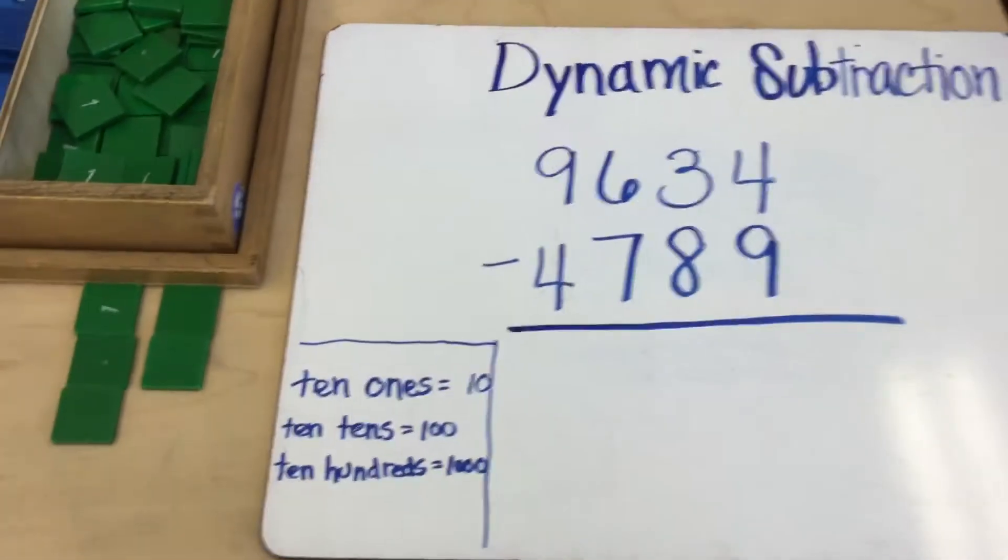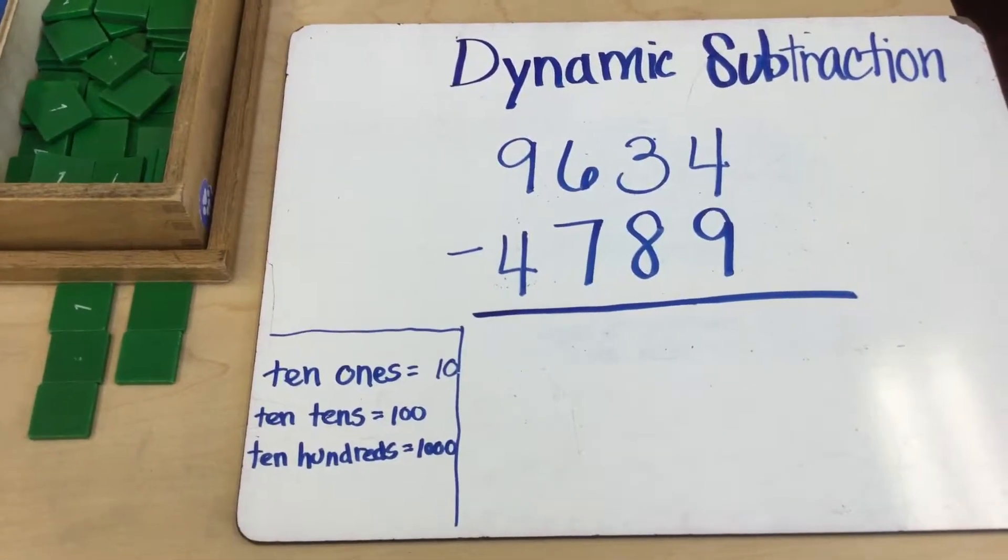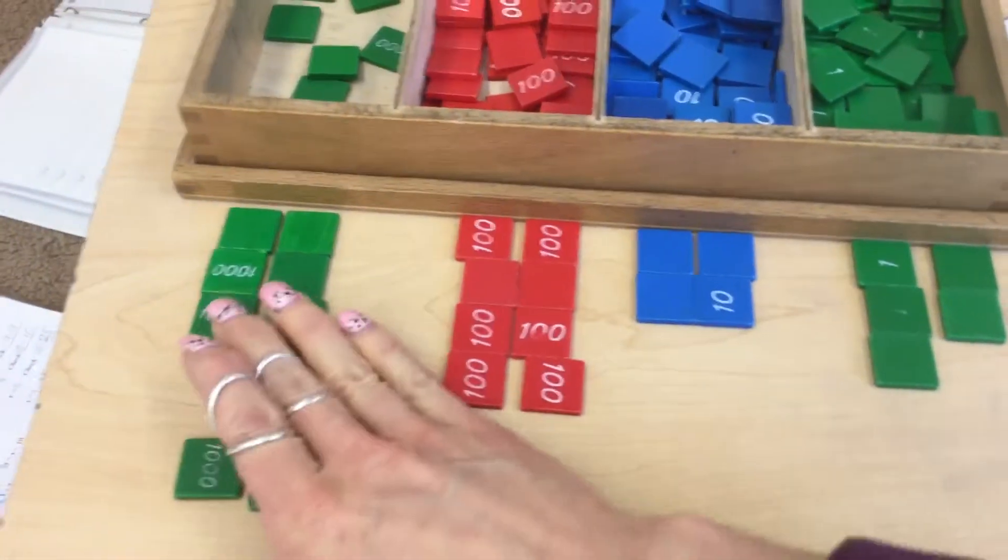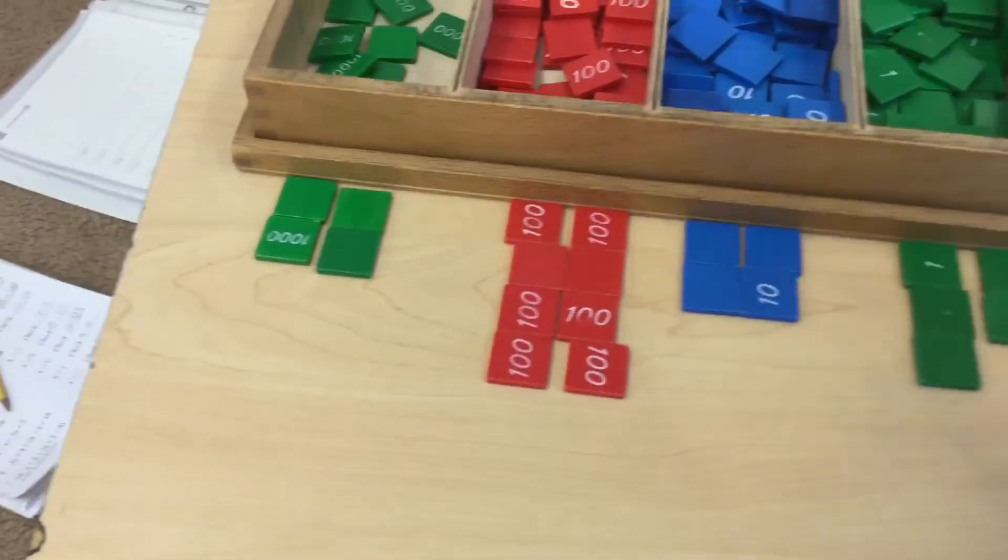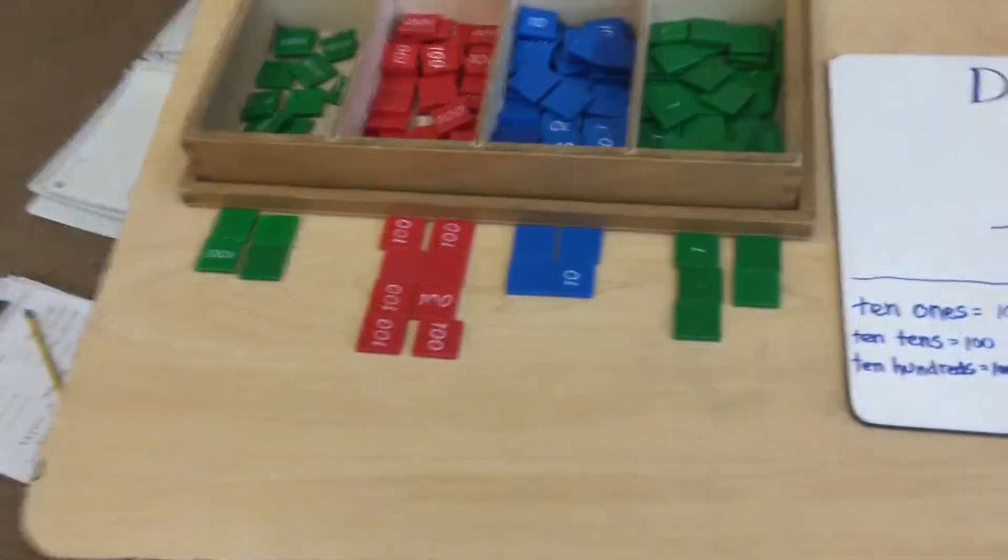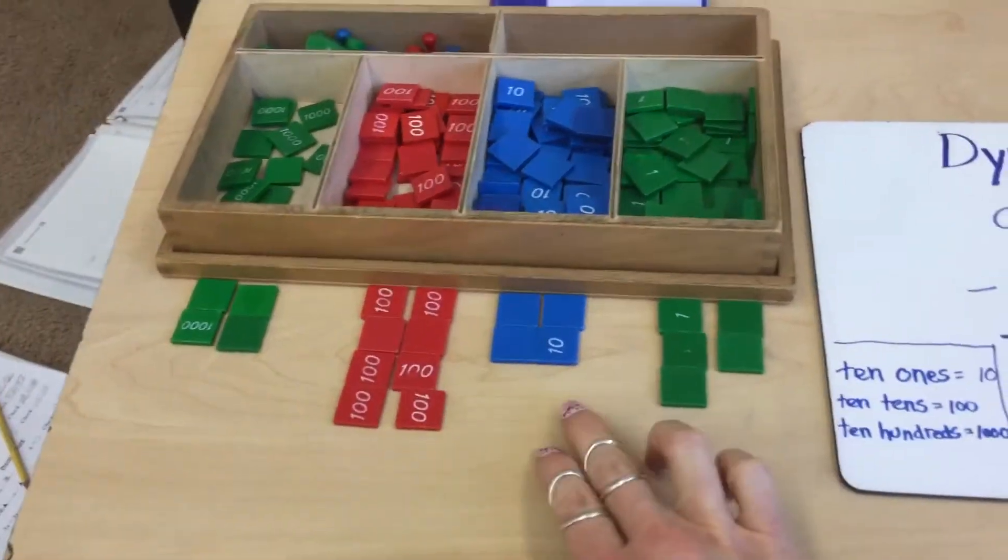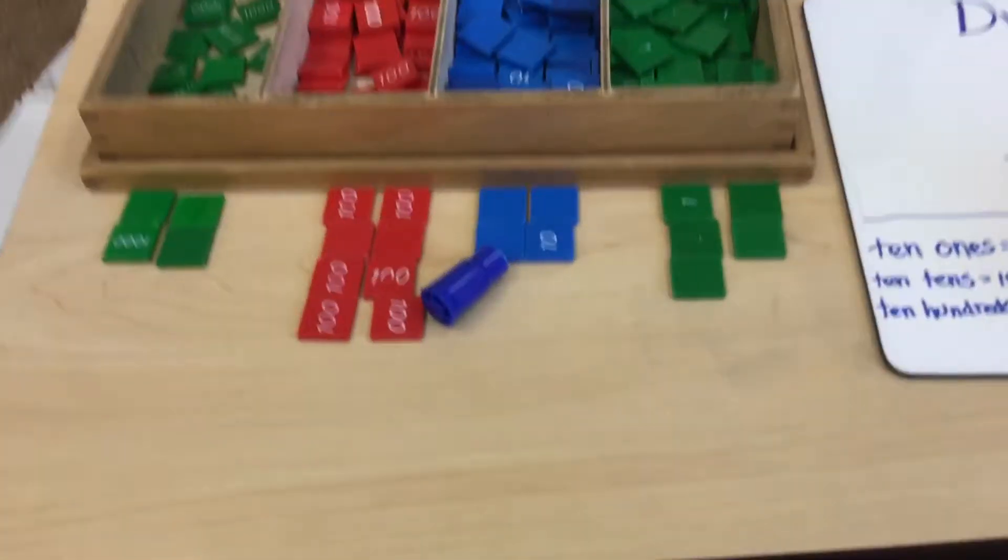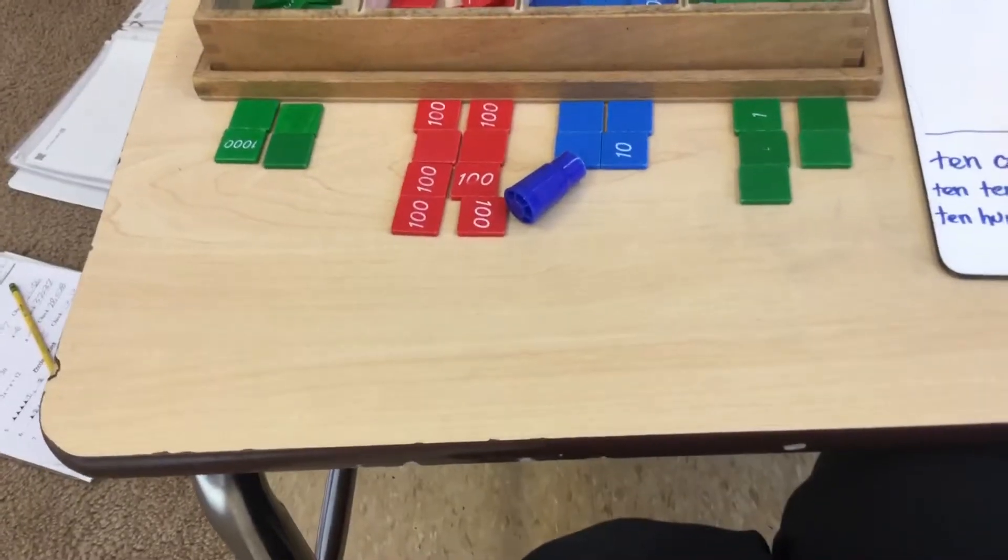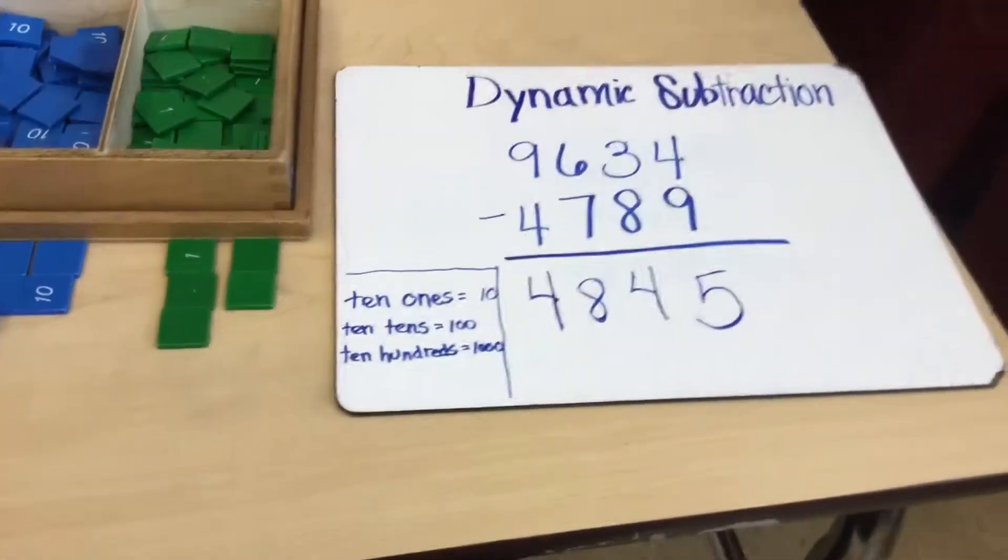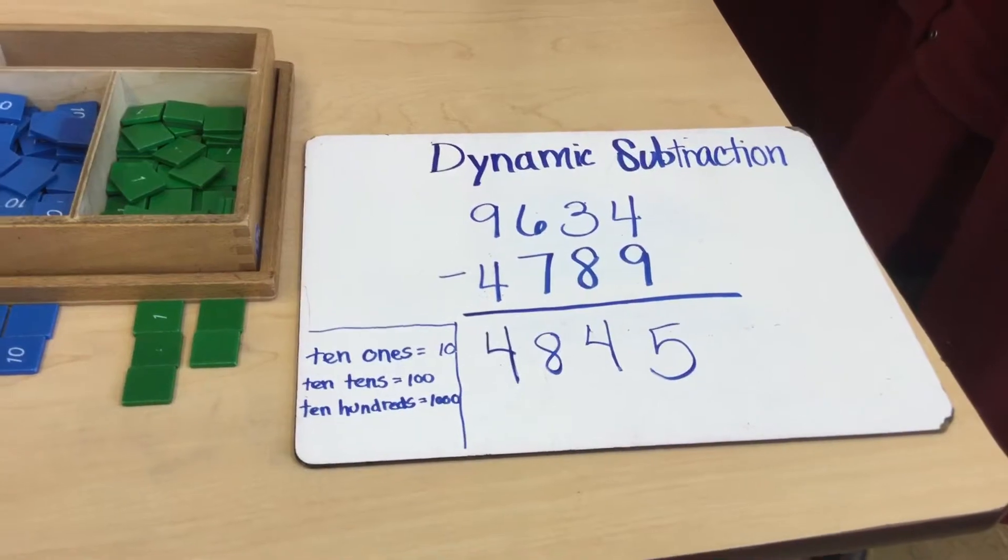And then finally I'm over here at my thousands, and I simply need to take away four. Well, good thing I have more than four so I can take away four thousands. And there's my answer: four thousand eight hundred forty-five. So I will write that down. And that is how you do dynamic subtraction using a stamp game.